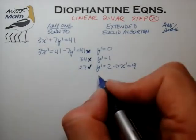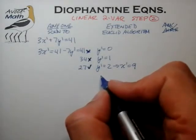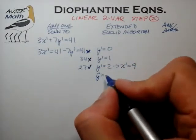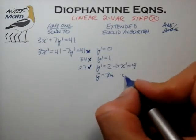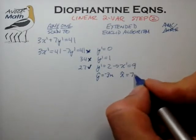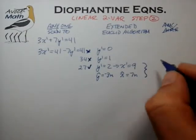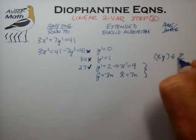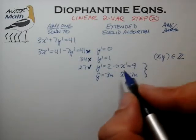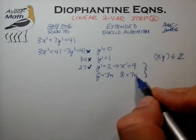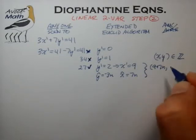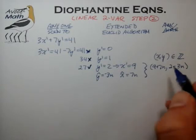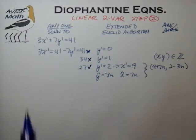From the previous sheet, we found that the infinite solution set for the zero form of this equation is ŷ = −3n and x̂ = 7n. Adding those to our particular solution, the general solution set — for x, y ∈ ℤ — is x = 9 + 7n and y = 2 − 3n. That is the general form of the solution to the full Diophantine equation.